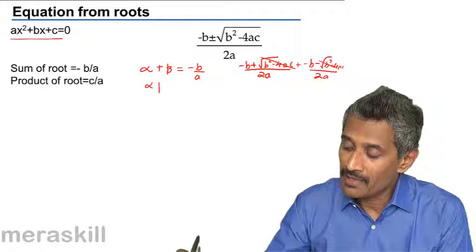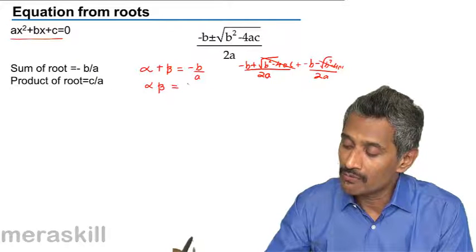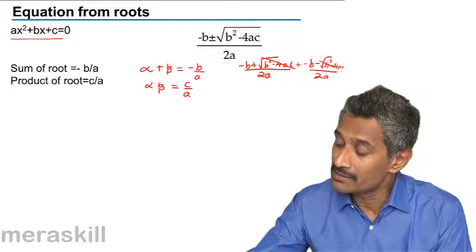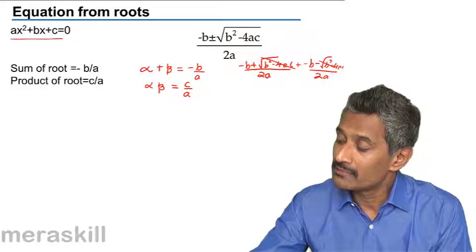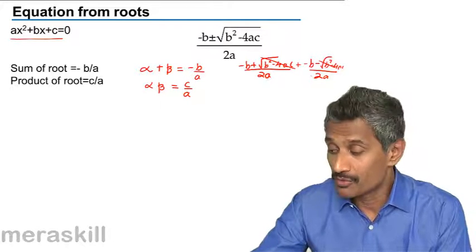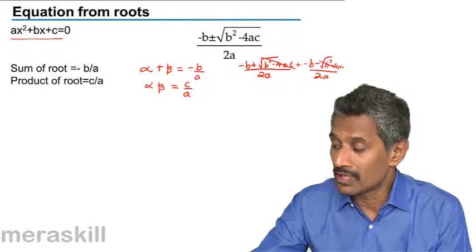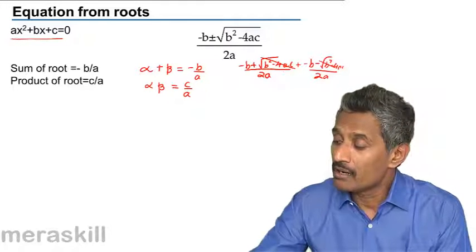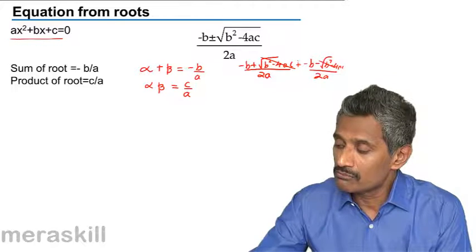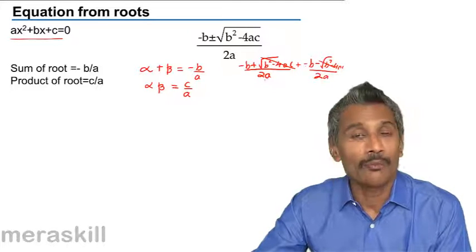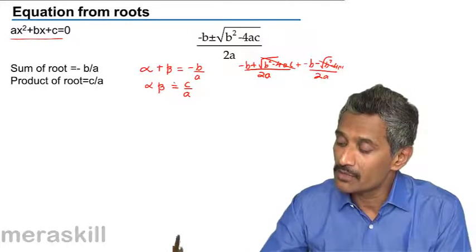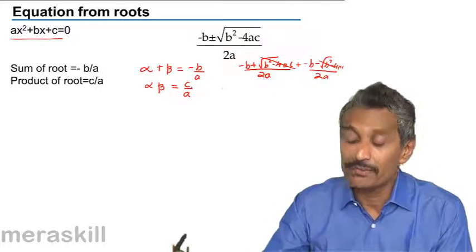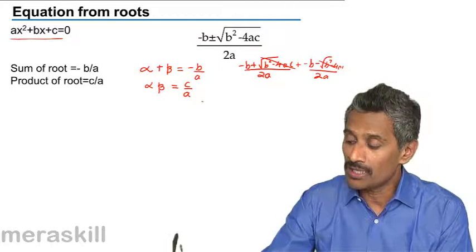And alpha times beta would always be c by a. If you multiply those two expressions together, you will end up getting c upon a. So alpha times beta equals c upon a.